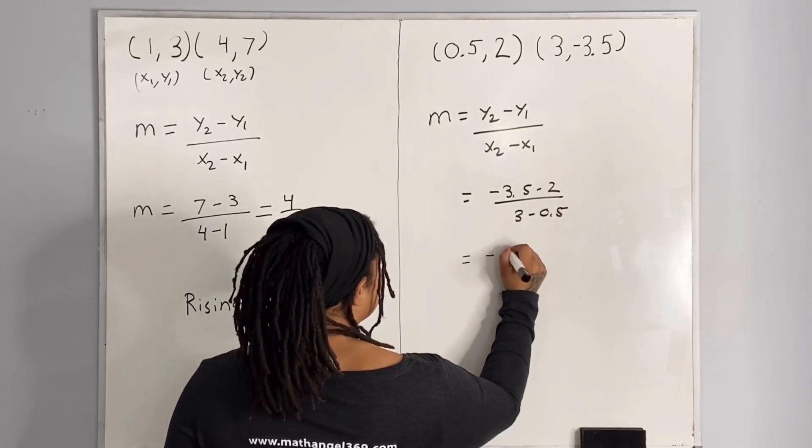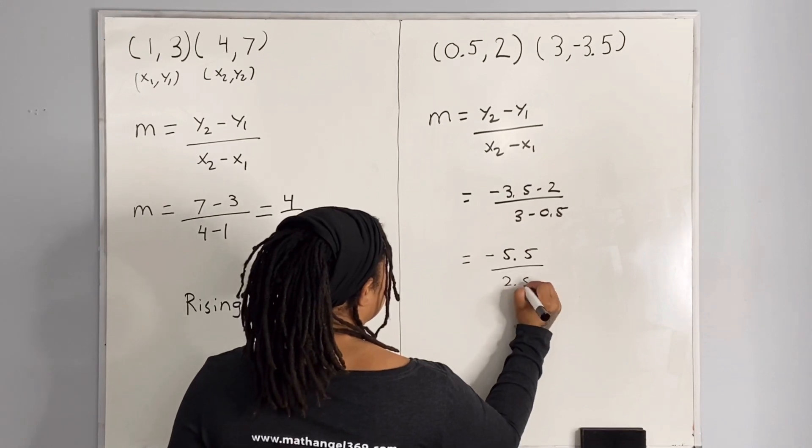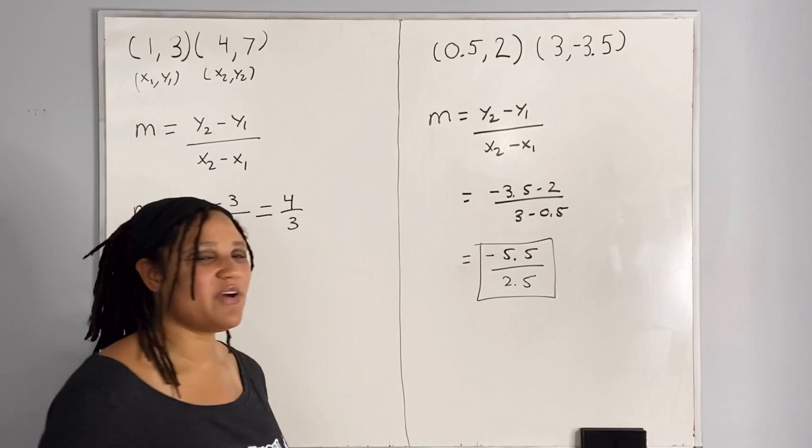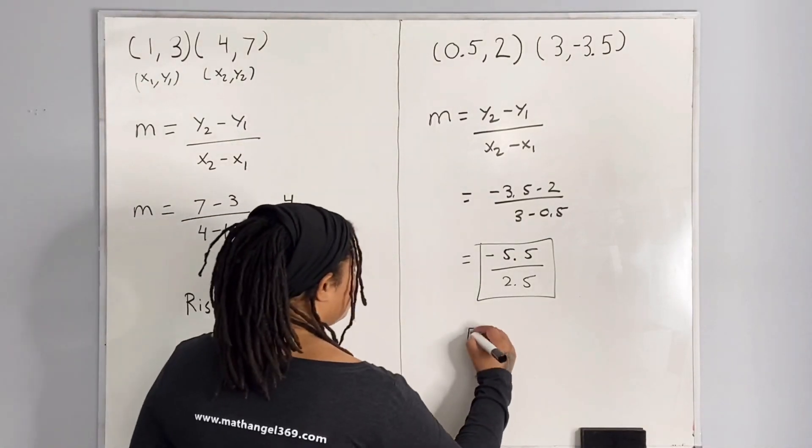which gives us negative 5.5 over 2.5. So our slope is negative 5.5 over 2.5. And since our slope is negative, we say that it is falling.